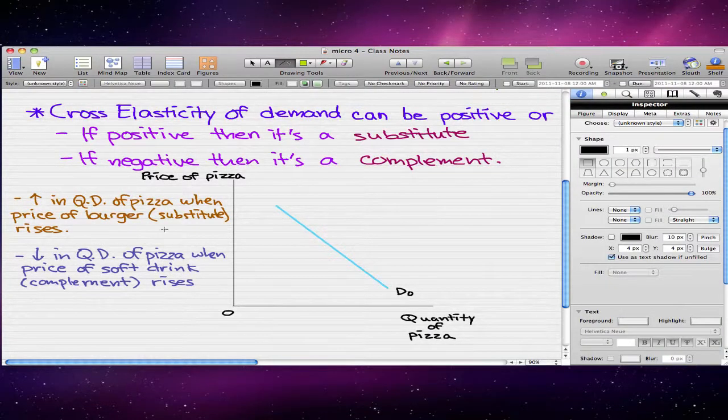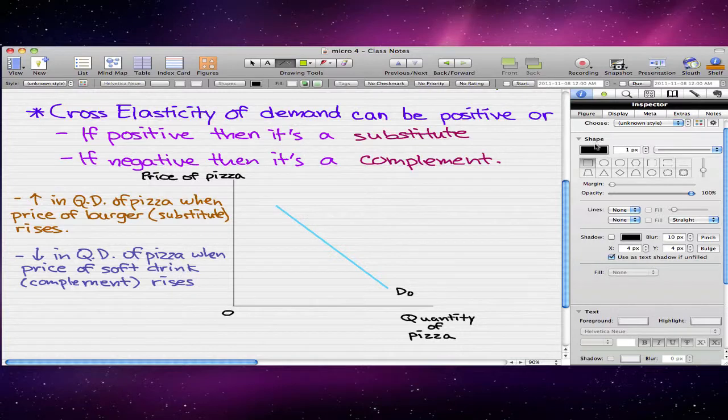And we're going to do a short example to show us what this really means. Here we're going to use the example of pizza, and we're going to take burgers as its arch-nemesis. Let's take the event in which there's an increase in quantity demanded of pizza when the price of burgers, which is a substitute of pizza, rises.